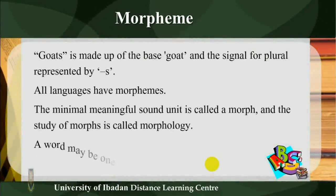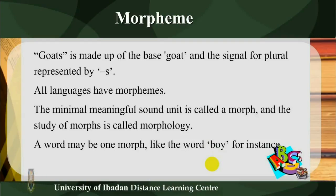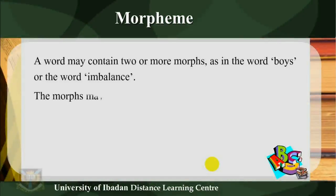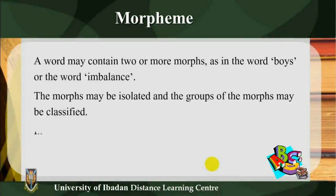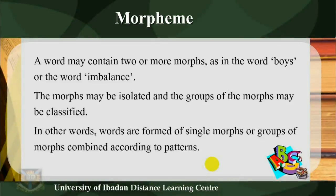All languages have morphemes. The minimal meaningful sound unit is called a morph, and the study of morphs is called morphology. A word may be one morph, like the word 'boy.' A word may contain two or more morphs, as in the word 'boys' or the word 'imbalance.' The morphs may be isolated and classified. Words are formed of single morphs or groups of morphs combined according to patterns.